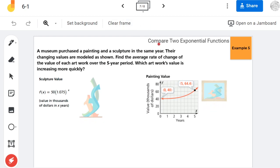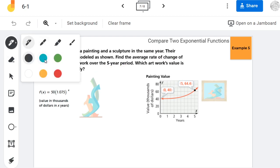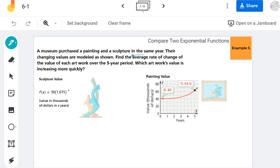Their changing values are modeled as shown. Find the average rate of change of each value of artwork over the five-year period. So here, they're asking for the slope. Which artwork's value is increasing more quickly? So which one has a bigger slope?